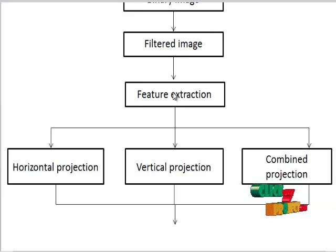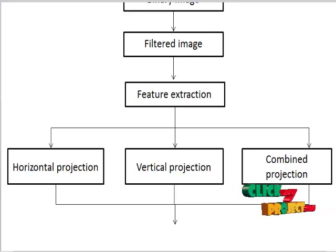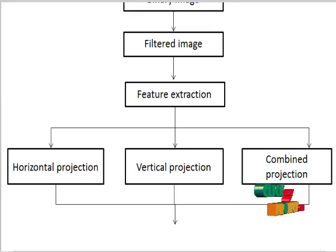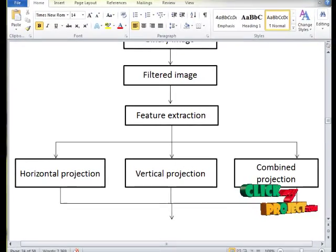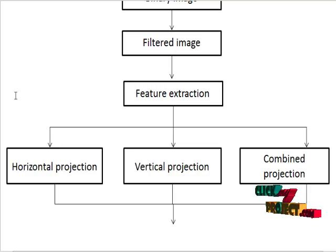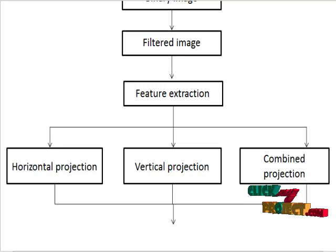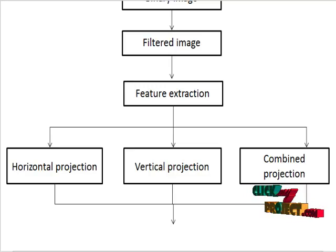Then in feature extraction, discrete radon transform technique is used to identify the signature image, whether it is original or forgery. Discrete radon transform extracts the projection for the feature image. Discrete radon transform means line integral along a line inclined at an angle. In the feature extraction step, we get the horizontal projection, vertical projection, and combined projection.